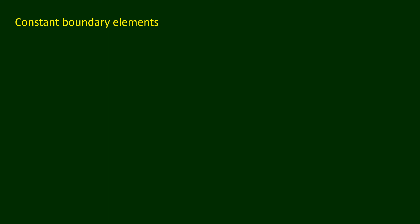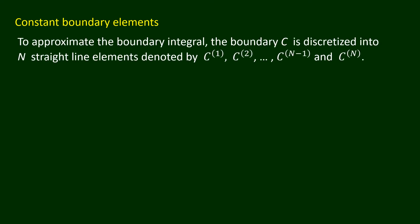To approximate the boundary integral, the boundary C is discretized into N straight line elements denoted by C1, C2, and so on until CN.